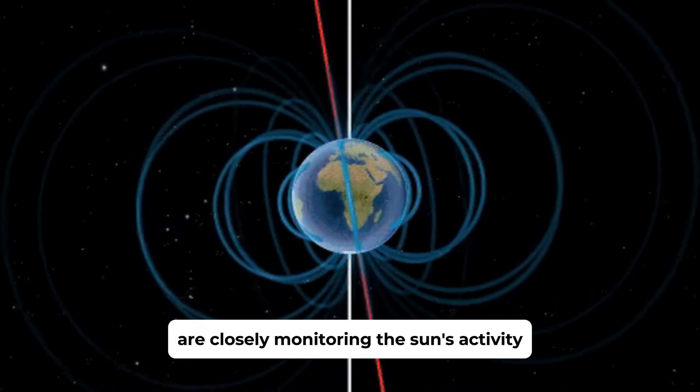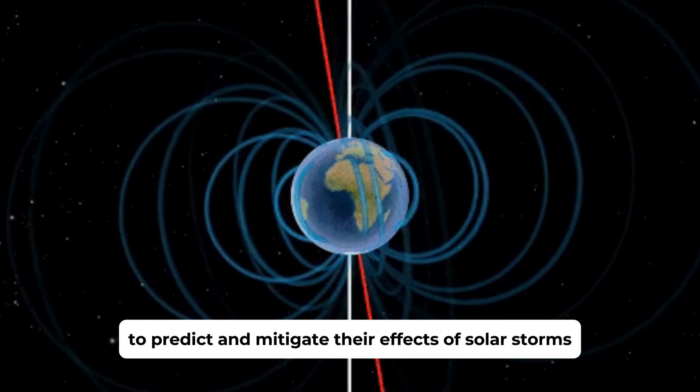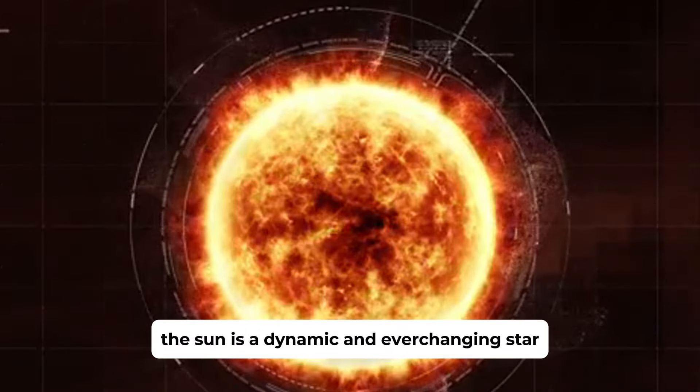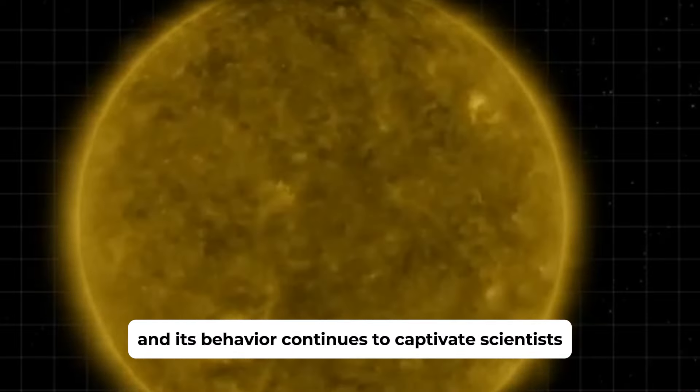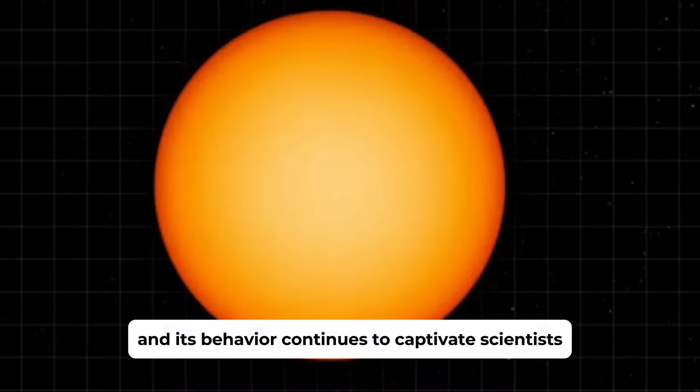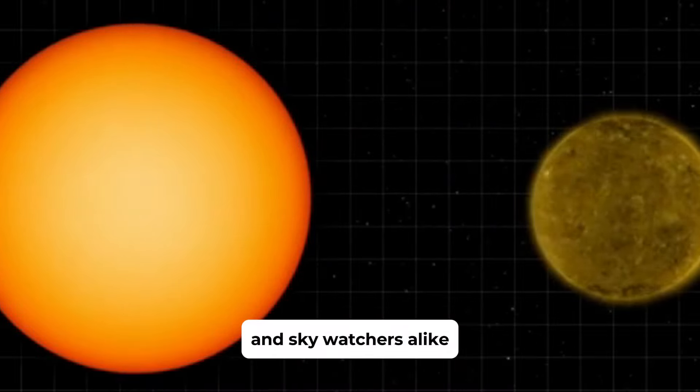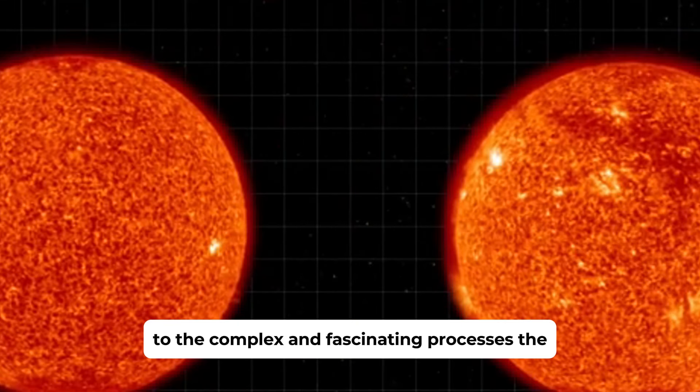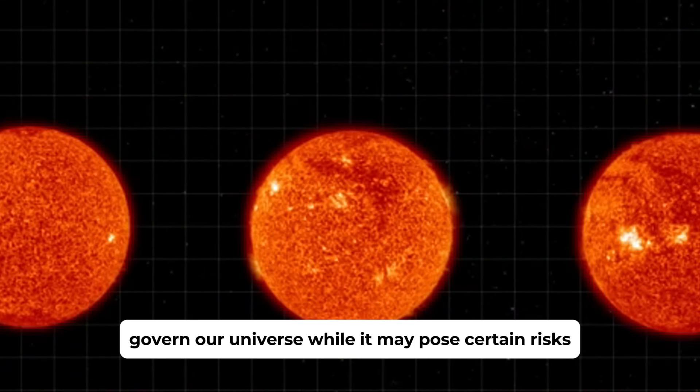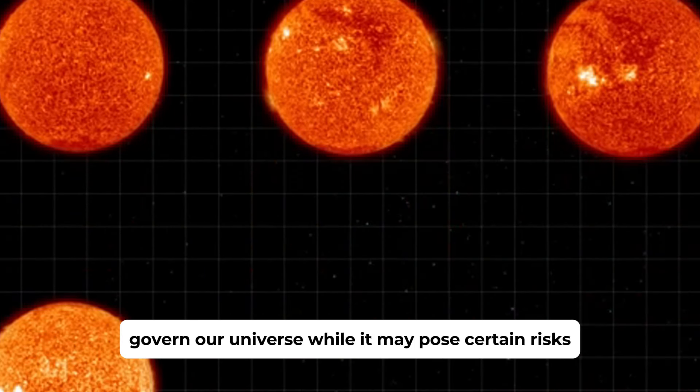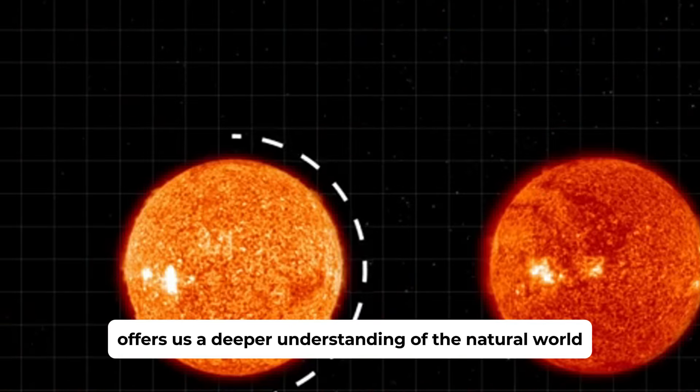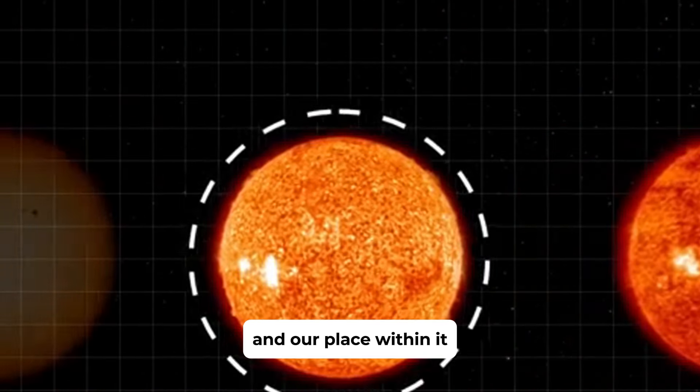Scientists are closely monitoring the sun's activity to predict and mitigate the effects of solar storms. The sun is a dynamic and ever-changing star, and its behavior continues to captivate scientists and sky watchers alike. The sun's magnetic field reversal is a testament to the complex and fascinating processes that govern our universe. While it may pose certain risks, it also offers us a deeper understanding of the natural world and our place within it.